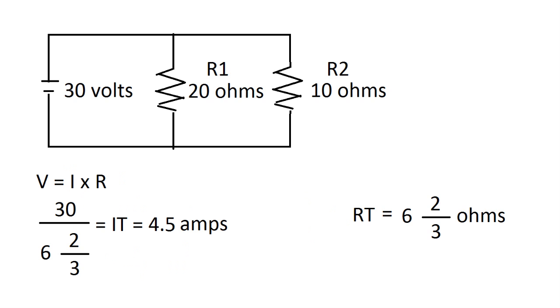Now recall voltage equals the current times resistance. So if we take voltage over resistance, we get the current. So if we take 30 over 6 and 2 thirds, we get 4.5 amps as current total.